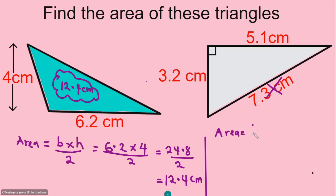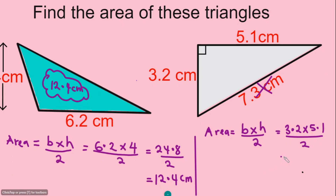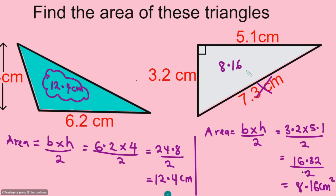The area formula gives us: base times vertical height divided by 2. The base is 3.2 and the vertical height is 5.1, divided by 2. Multiplying 3.2 by 5.1 gives 16.32, and 16.32 divided by 2 equals 8.16 centimeters squared. So the total area of this triangle is 8.16 centimeters squared.